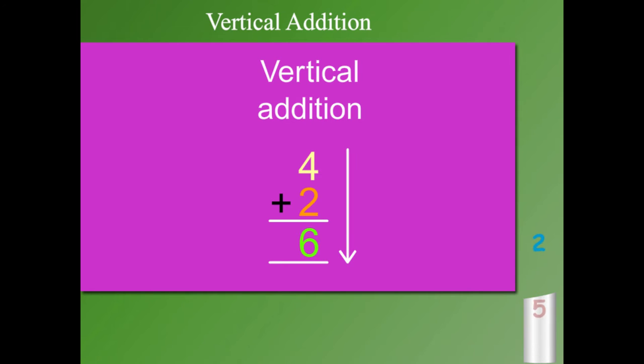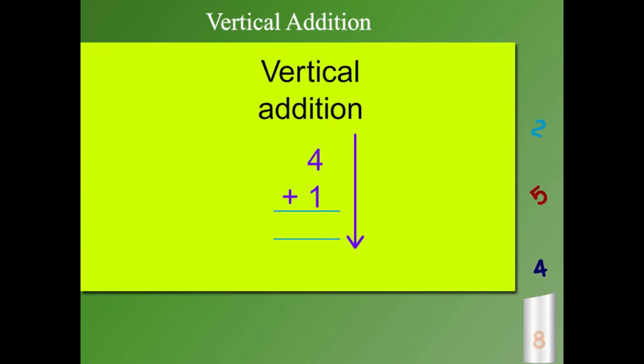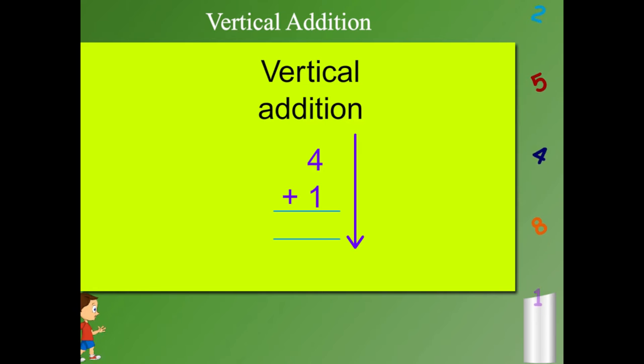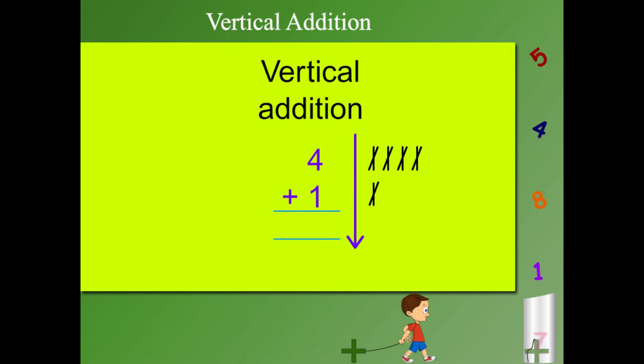Here is another example. How much is 4 plus 1? Simple. Draw 4 vertical lines and then one more. Now count. 1, 2, 3, 4, 5. So the answer is 4 plus 1 is 5.